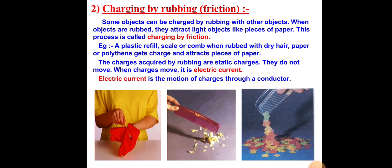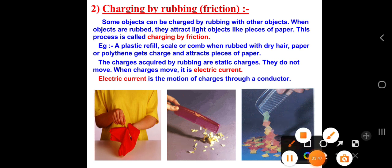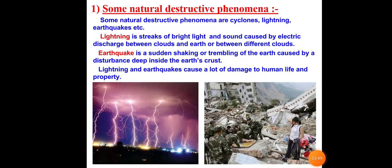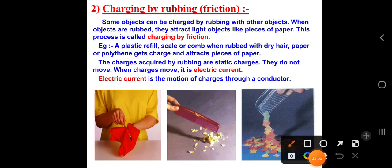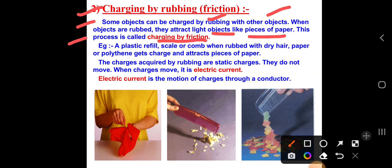Let us discuss how charges are produced. In the last class we discussed how charges are going to be produced. Here we have one activity to understand this: charging by rubbing. Some objects can be charged by rubbing with other objects. When objects are rubbed they attract light objects like a piece of paper. This process is called charging by friction.